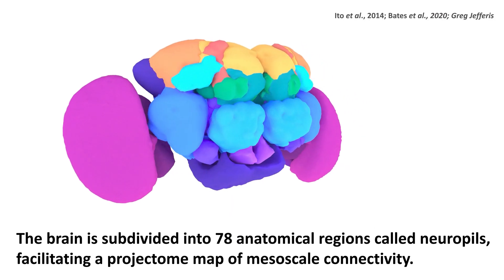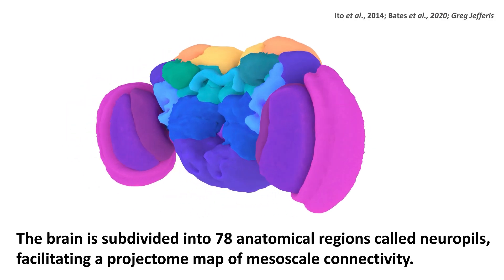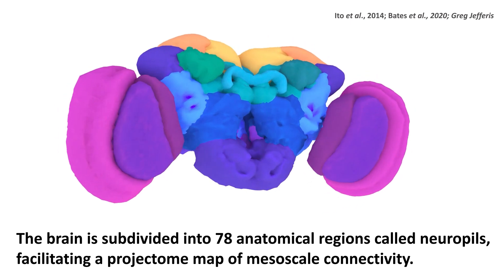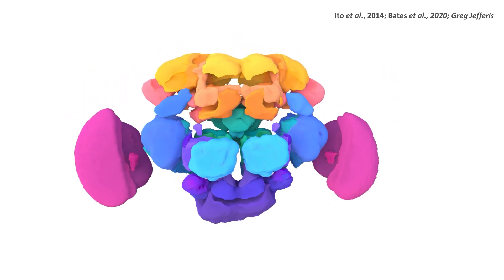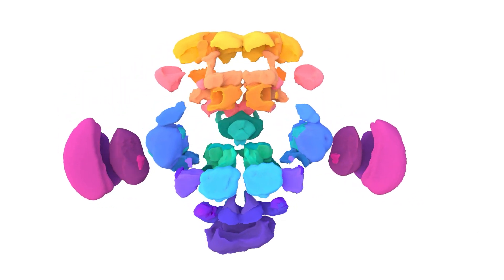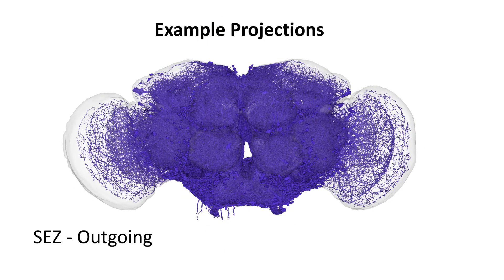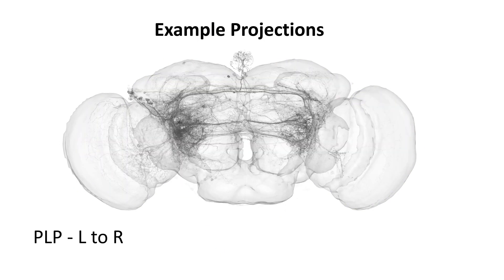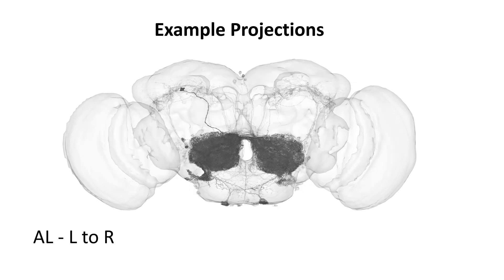There are 78 neuropil, and they have facilitated a projectome map of mesoscale connectivity in the fly brain. This animation is missing the ocella and the lamina, but they're there for analysis. And here are a few example projections out and in and among neuropil.